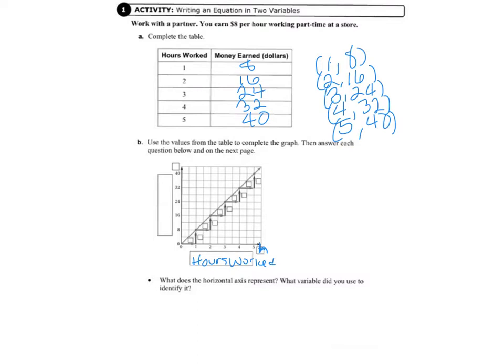And then on the vertical axis, we're going to label that money earned. And it's important to put that that's in dollars. And we need a variable for this axis as well. So we're going to put an M for money.